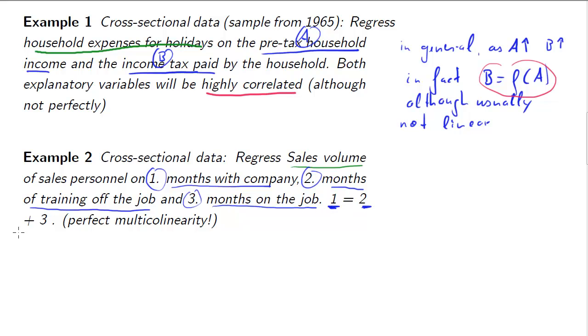So 1 is equal to the sum of 2 and 3. You're with the company, and if you're with the company, you're either training or you're on the job. What we have here is an example of perfect multicollinearity.